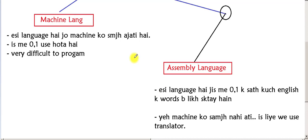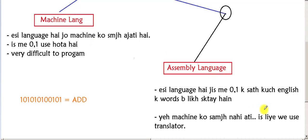Assembly language uses some English words — for example, suppose you want to add two numbers. In machine language you use only 0s and 1s, but in assembly language that group of instructions is given a name like 'ADD'. So assembly language still uses some zeros and ones but also uses some English words.